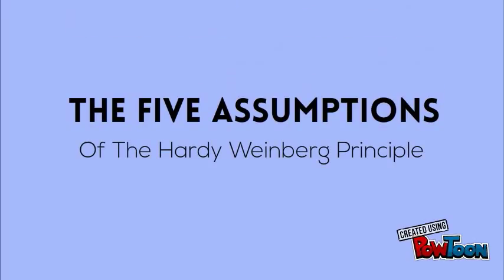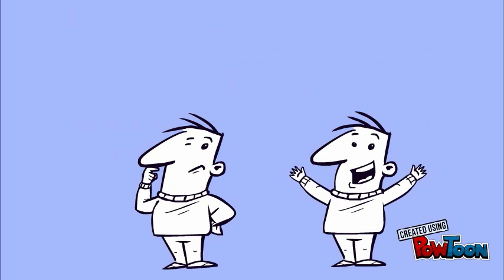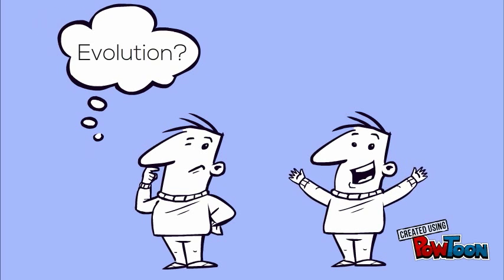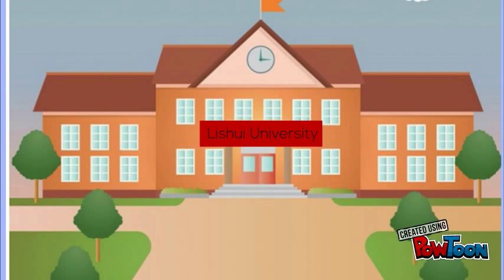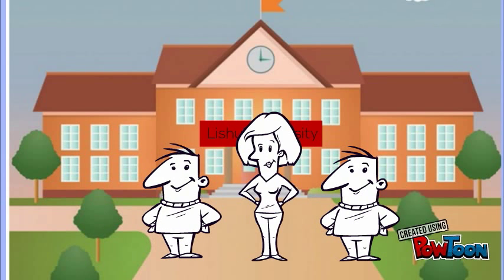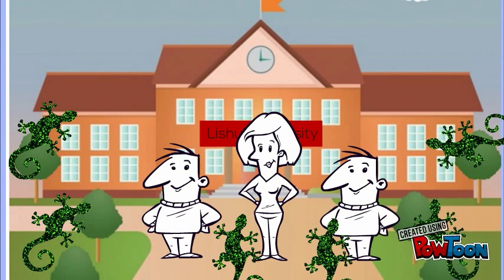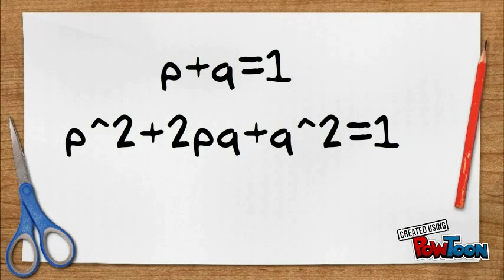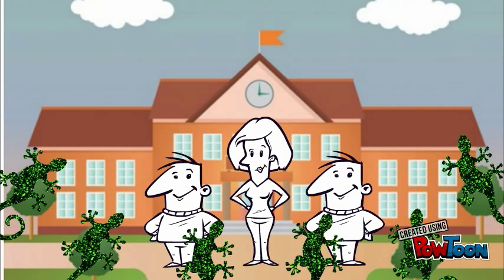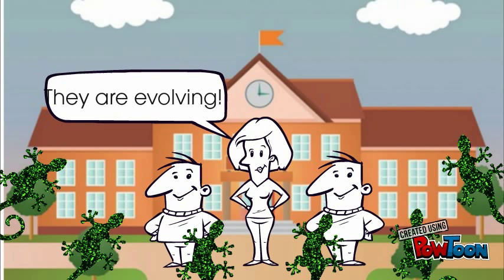To determine if a population is undergoing evolution, a reference frame is needed, which is provided by the Hardy-Weinberg equilibrium principles. For example, in a recent study conducted by Li Shui University in China, biologists genotyped a population of geckos and used these values to prove over a certain duration of time that the population was not in Hardy-Weinberg equilibrium, which supported their hypothesis of evolution in the gecko species.